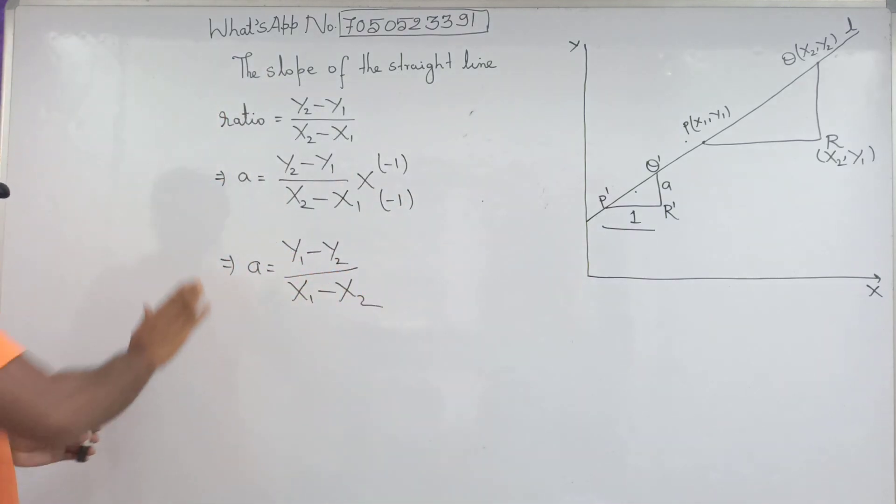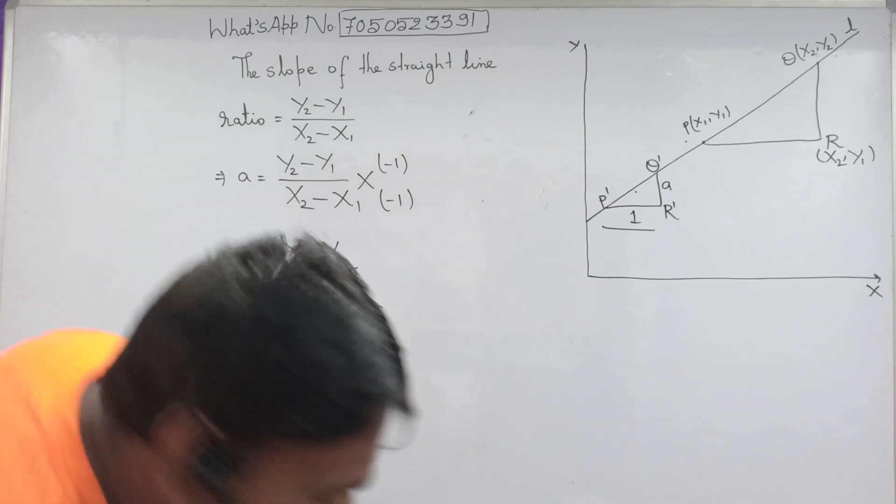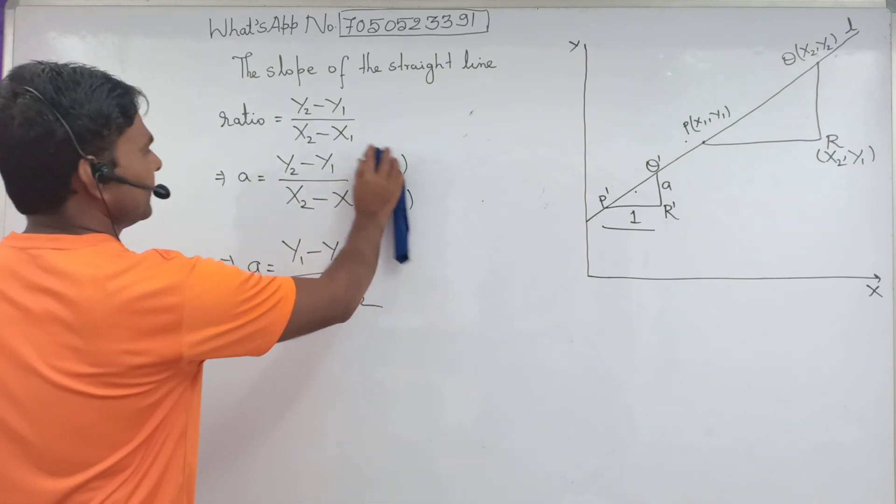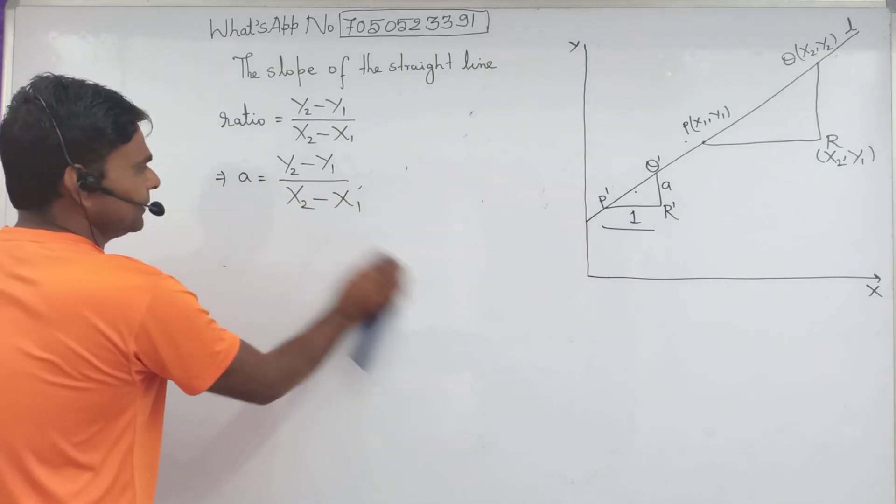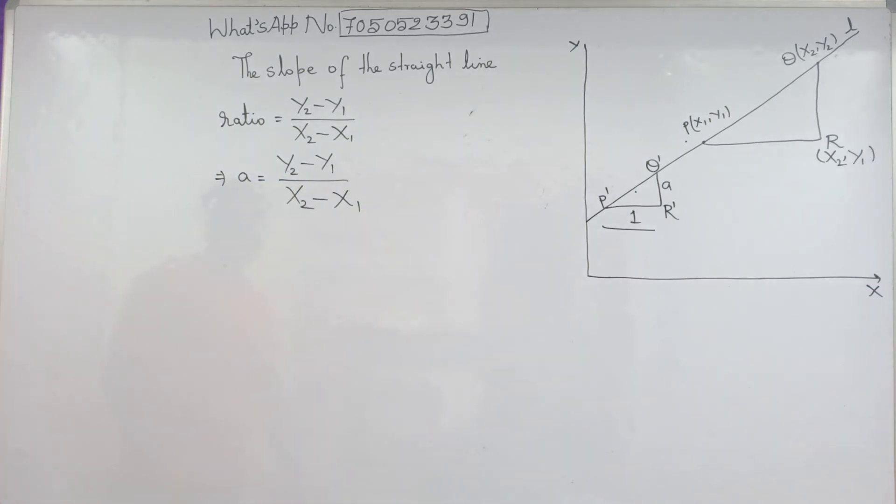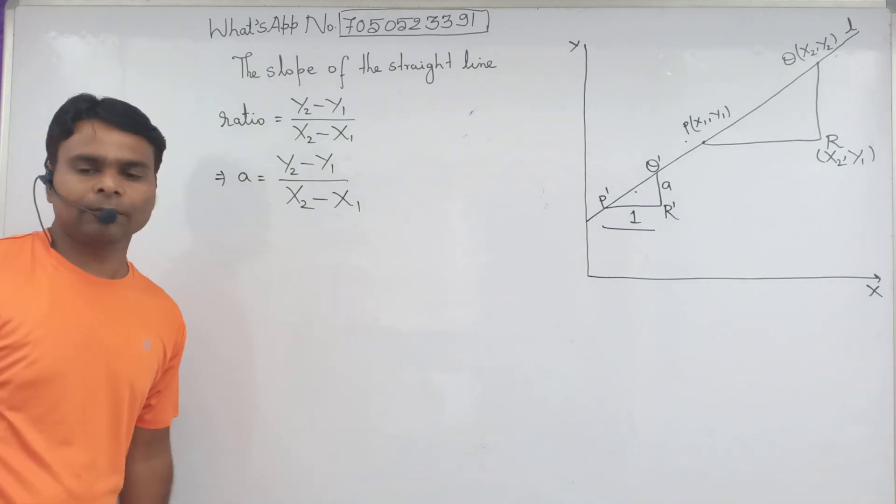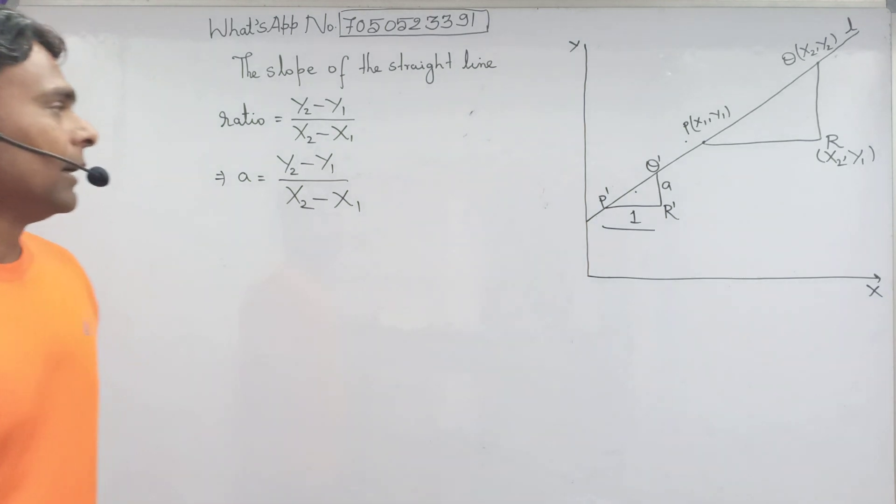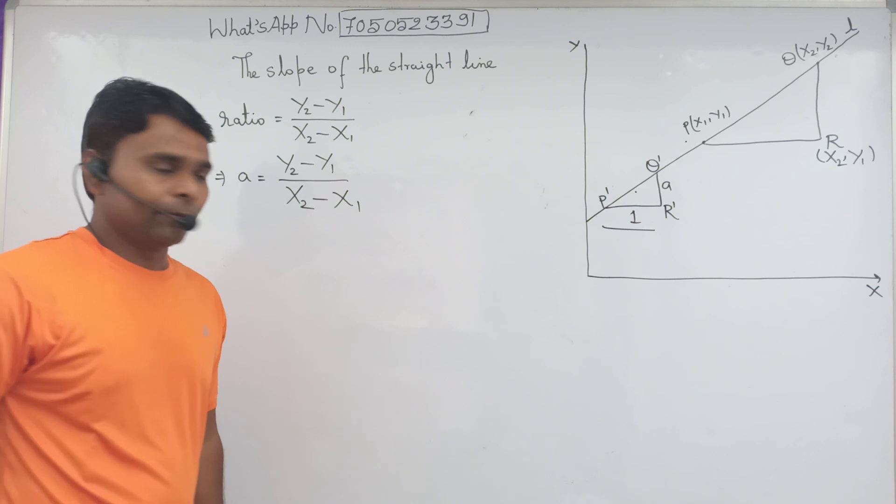So basically the slope of a straight line, you can remember this: A equal to y2 minus y1 over x2 minus x1. Now it is time to have a practical problem.